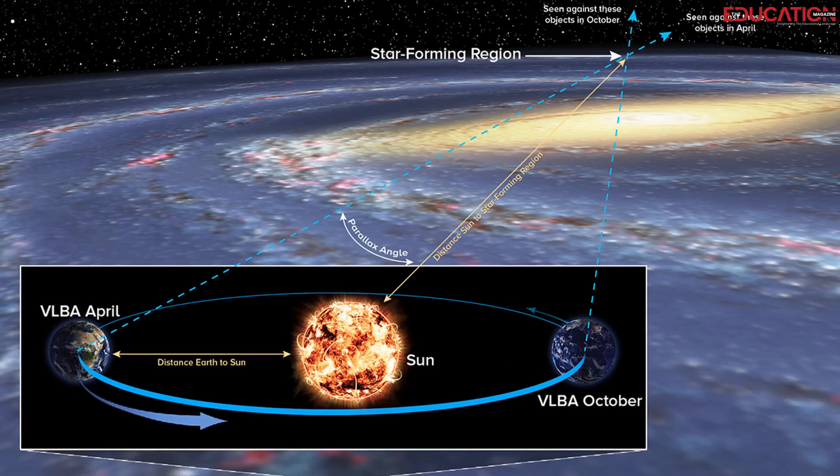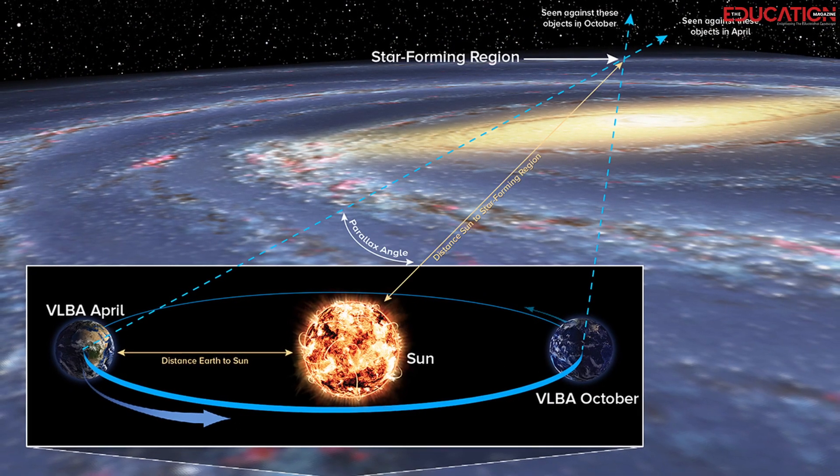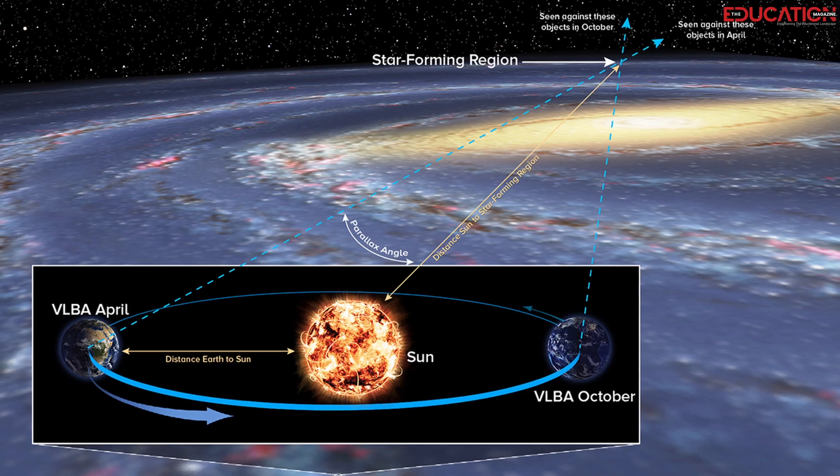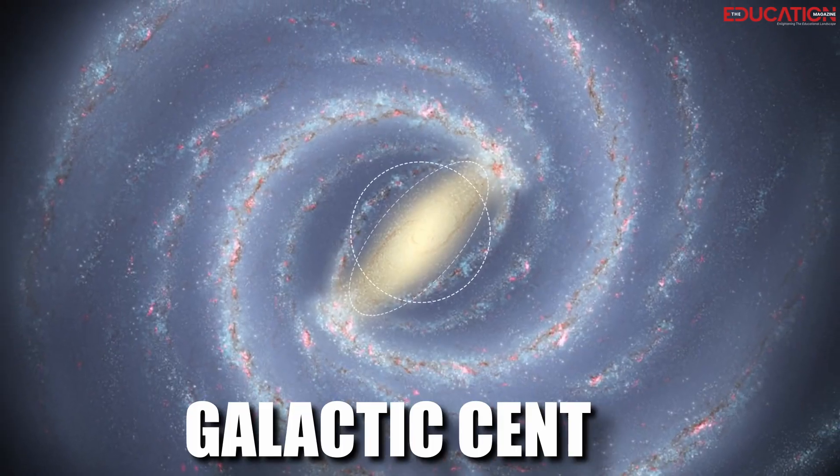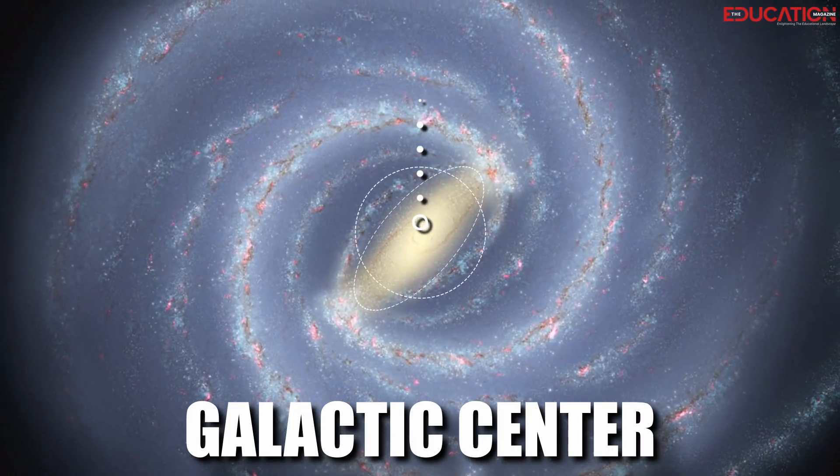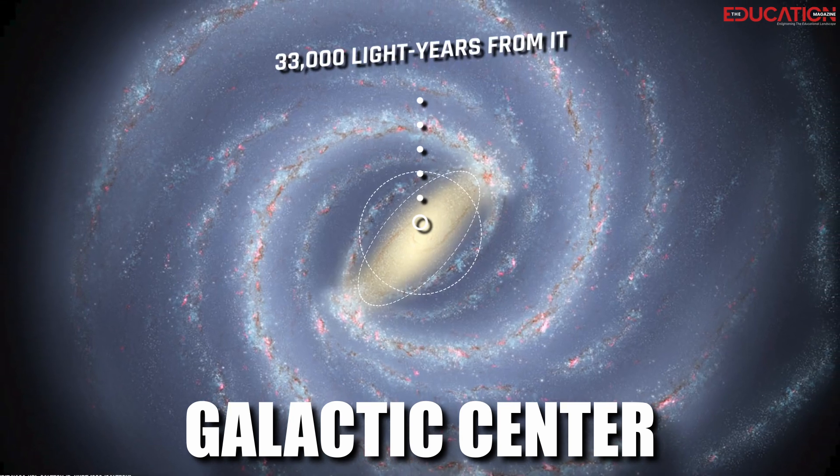Herschel measured the parallax of several stars in the Milky Way, and he found that they were all clustered around a central point. This central point is the galactic center, and Herschel estimated that we are about 33,000 light-years from it.